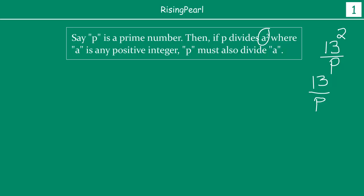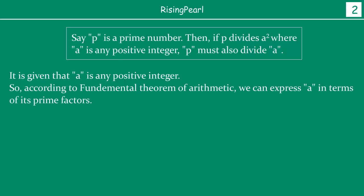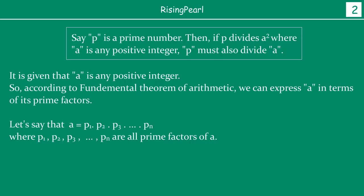So let's find out how we can prove this. It is given that a is any positive integer. So according to the fundamental theorem of arithmetic, we can express a in terms of its prime factors — because the fundamental theorem of arithmetic states that any composite number can be uniquely expressed as a product of its primes. So we can write a as: a = p1 × p2 × p3 × ... × pn, where p1, p2, p3 are all prime factors of a.